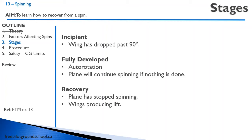There are three stages to a spin. The first is the incipient spin — this is where the wing has just dropped past 90 degrees. The second is the fully developed spin, which is autorotation; you could let go of the controls and the aircraft will continue to spin. The third stage is recovery — the plane has stopped spinning, the wing is now producing lift, and though you may still be heading toward the ground, you're no longer stalled. At this point airspeed is rapidly increasing and you must recover from the dive.